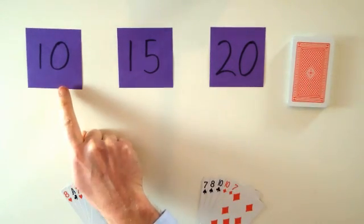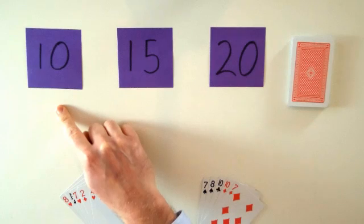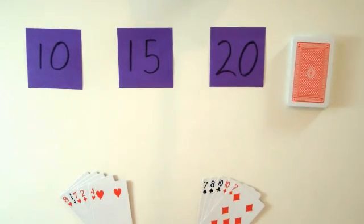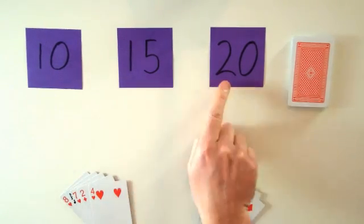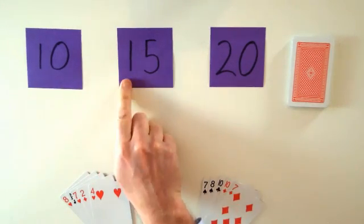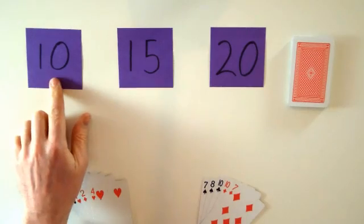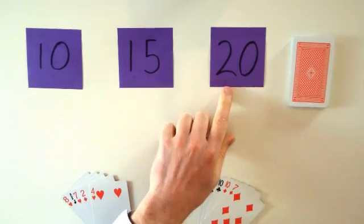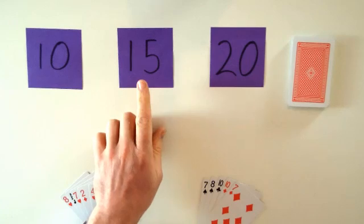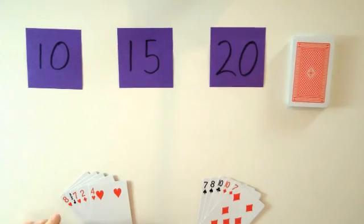Now I've labeled three different piles, hence the name of the game, which is Three Piles. You don't have to label them, but if you do label them it's just easier to remember which value you need to equal on each pile. So I've got a pile for 10, a pile for 15, and a pile for 20.